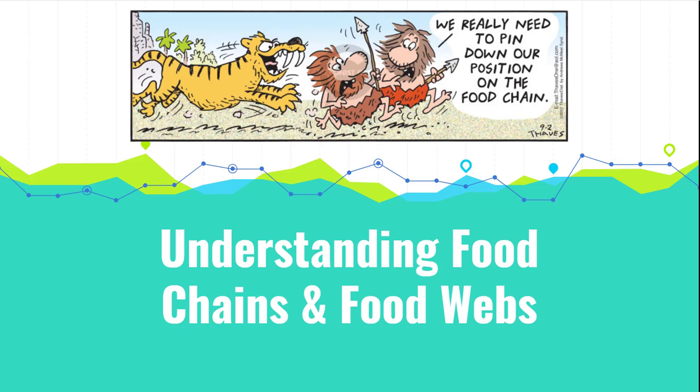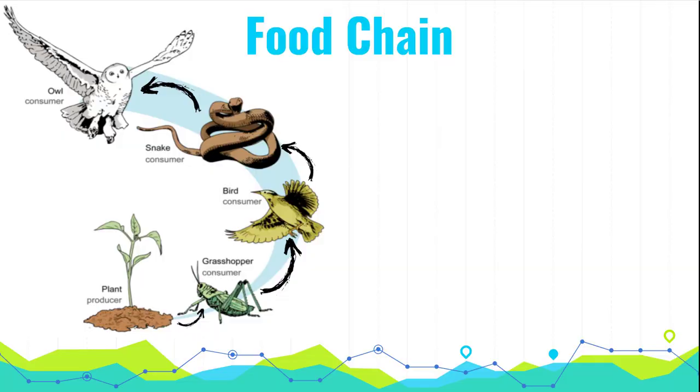Today's topic we're going to work on understanding food chains and food webs. We're going to start with a food chain. A food chain shows the movement of energy and matter between organisms. So those arrows mean the movement of energy and matter. When we look at the arrows, an arrow means eaten by.